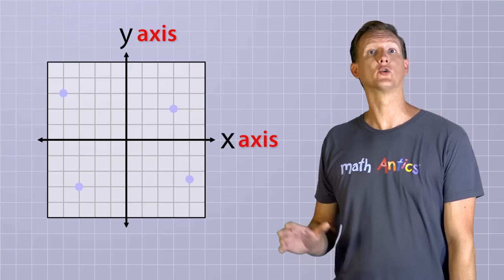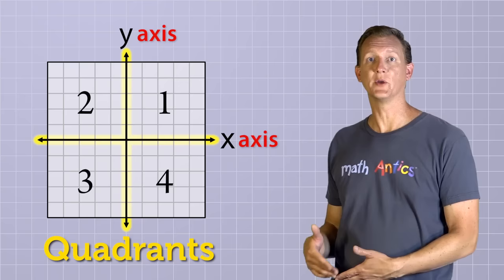And did you notice that each of these points is located in a different region of the coordinate plane? These four regions are called quadrants, and their boundaries are defined by the two axes of the coordinate plane. The quadrants are named 1 through 4, so we can easily refer to them in conversations if we need to.